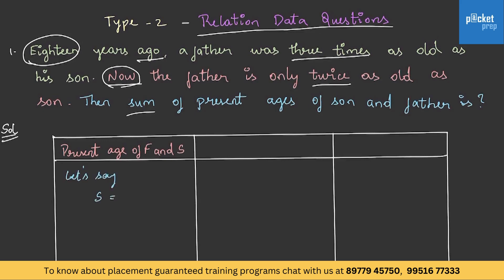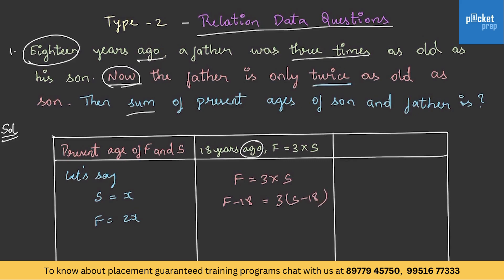18 years ago, father was 3 times as old as his son. Since 'ago' means subtract, f minus 18 equals 3 times s minus 18. Substituting, 2x minus 18 equals 3 times (x minus 18). On simplification, x equals 36.